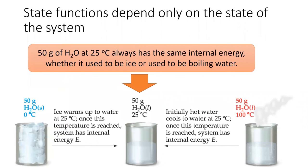Returning to chemistry, imagine you take 50 grams of ice and heat it to 25 degrees. Now, imagine taking 50 grams of boiling water and cooling it down to 25 degrees. That water that's at 25 degrees has the same enthalpy no matter which path it took to get there.